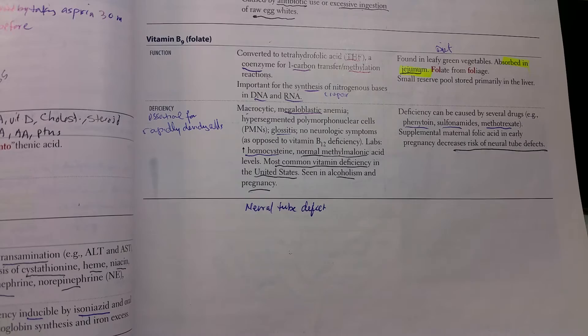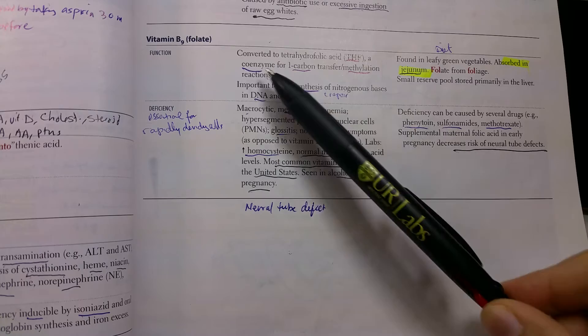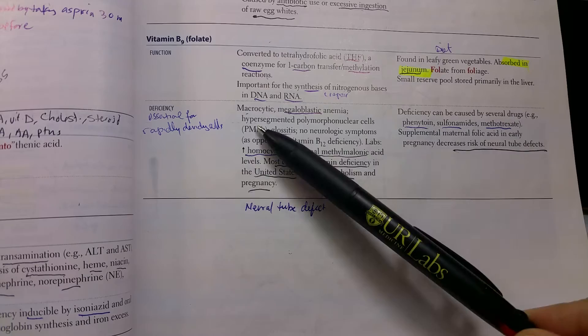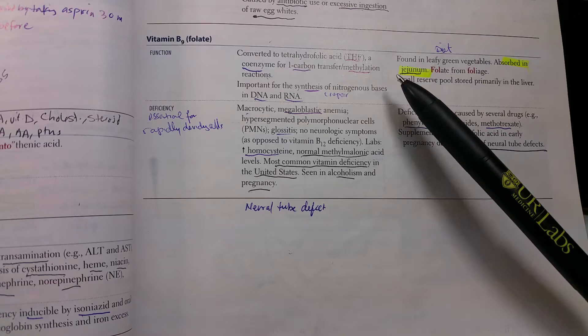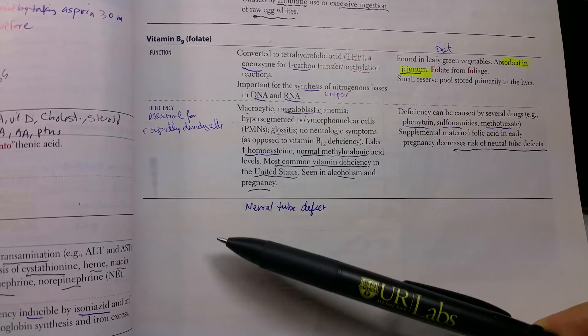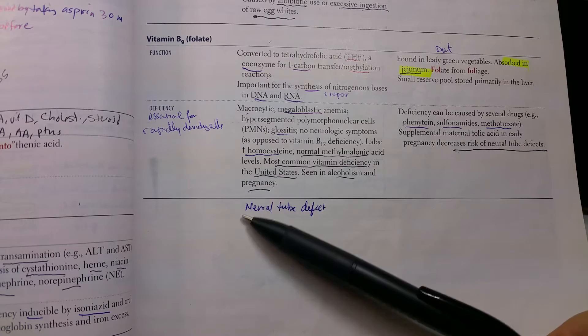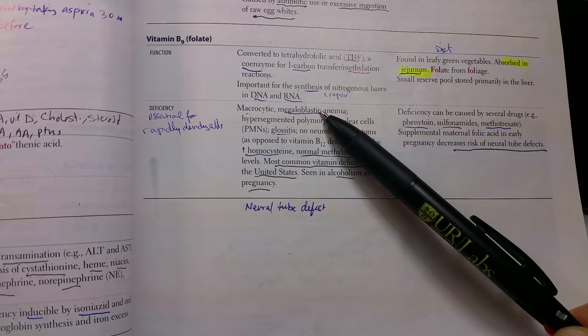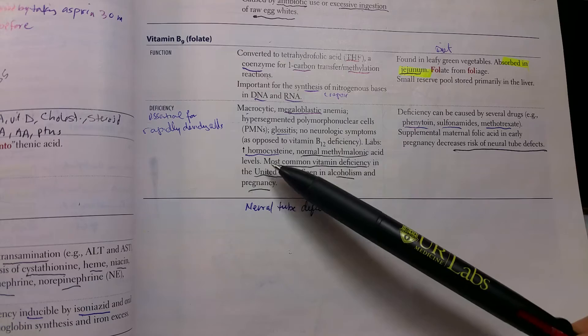Vitamin B9, folate, is one of the very important ones. It converts tetrahydrofolate. It's important for the synthesis of DNA and RNA, so it's very important for rapidly dividing cells. It is found in green leafy vegetables and absorbed in the jejunum. Vitamin B12 is in the terminal ileum, so note the difference because we'll compare vitamin B9 to vitamin B12. In deficiency, any rapidly dividing cells that need a lot are going to be affected, so the RBCs. It causes macrocytic megaloblastic anemia with hypersegmented nucleus. There are no neurological symptoms here; we'll talk about that later.